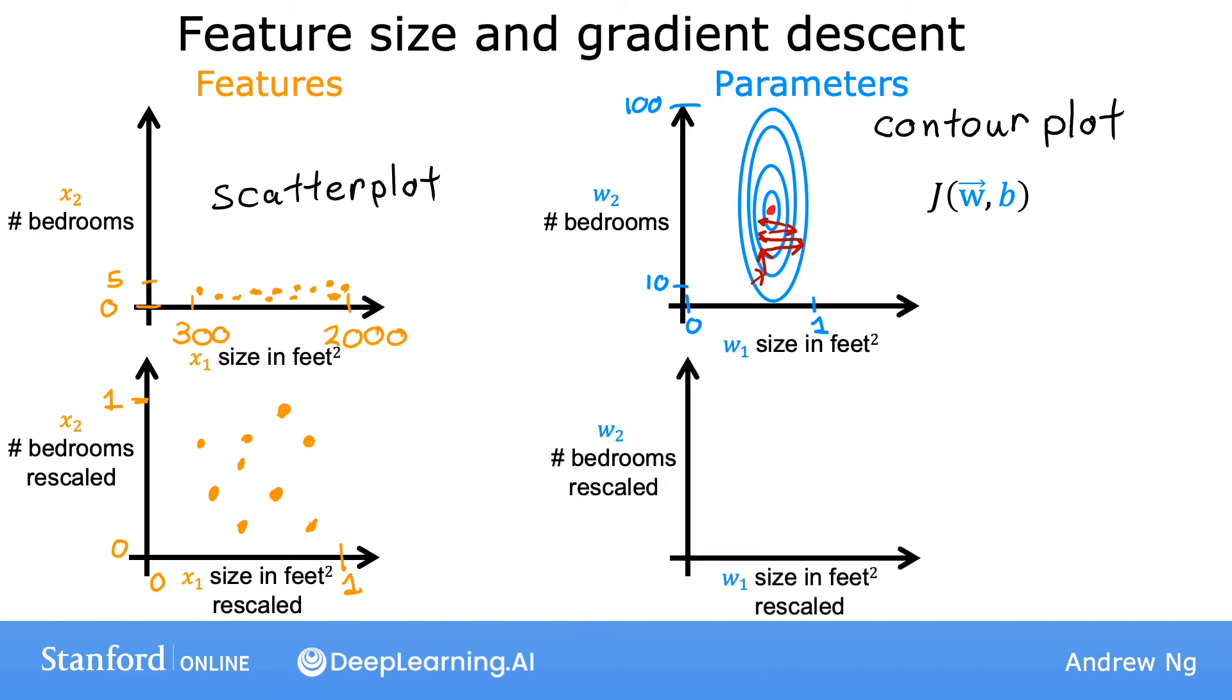And if you run gradient descent on a cost function defined on this rescaled x1 and x2 using this transformed data, then the contours will look more like this, more like circles and less tall and skinny, and gradient descent can find a much more direct path to the global minimum.